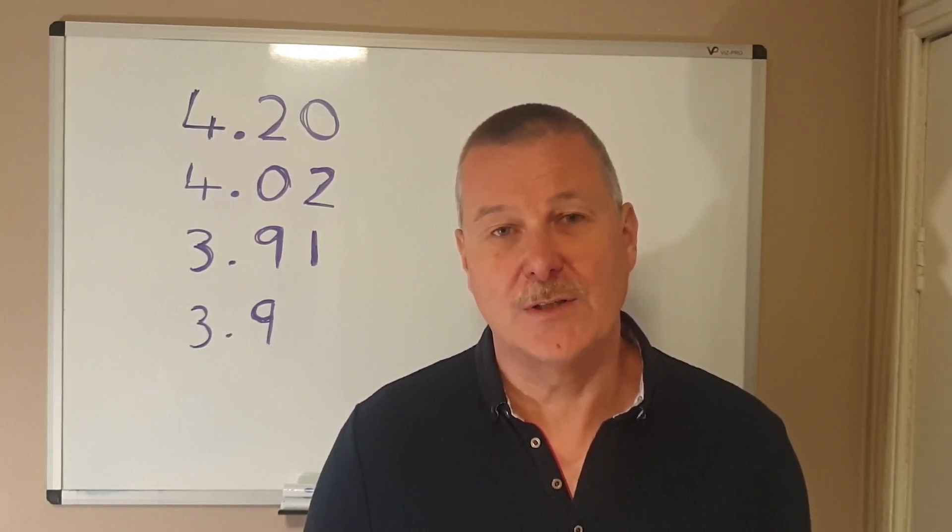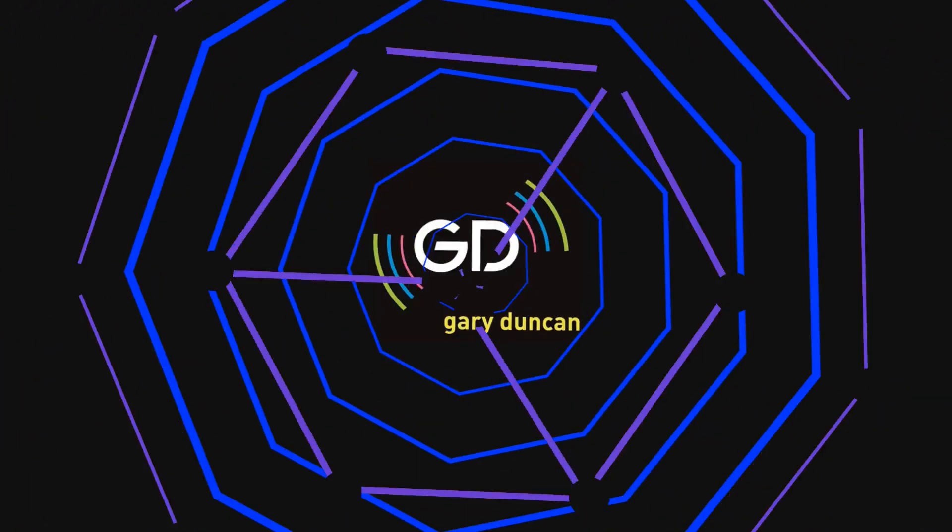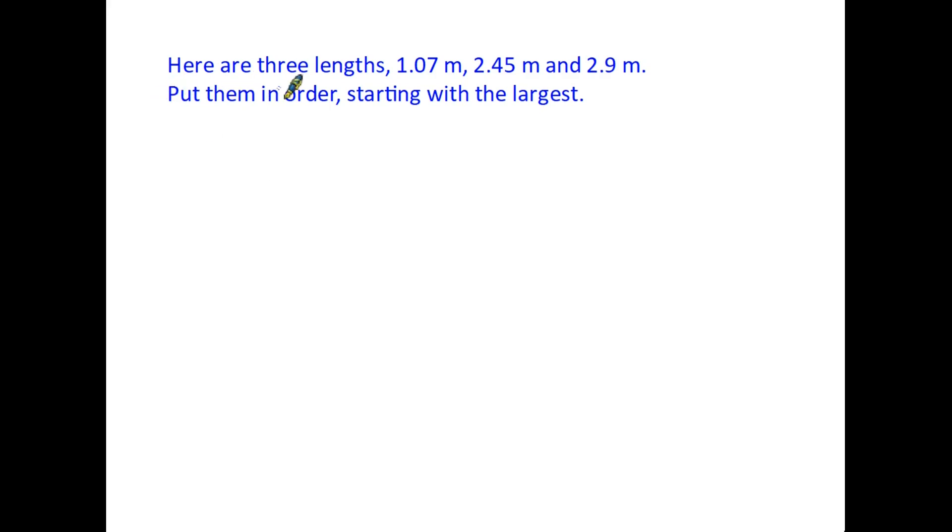Here's our first question. It simply says here are three lengths: 1.07 meters, 2.45 meters, and 2.9 meters, and it asks us to put them in order starting with the largest. The way to do this is first of all put them into a column so that we can make the comparisons more easily.